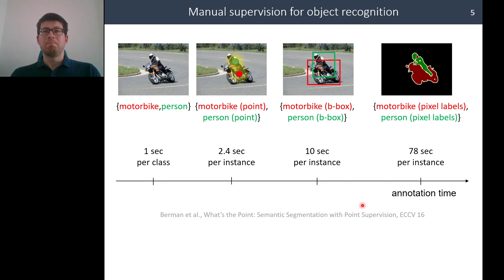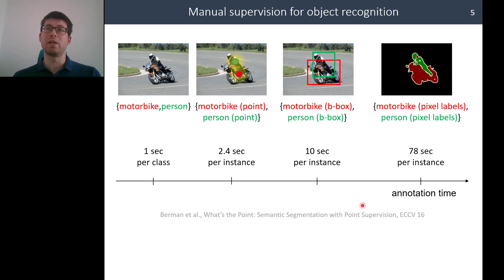This does not scale up when we want to label data in a detailed way — for example, with pixel-level labels — across more categories.